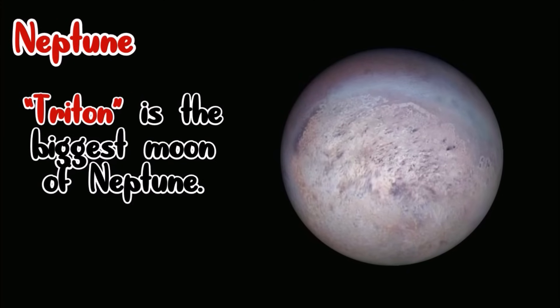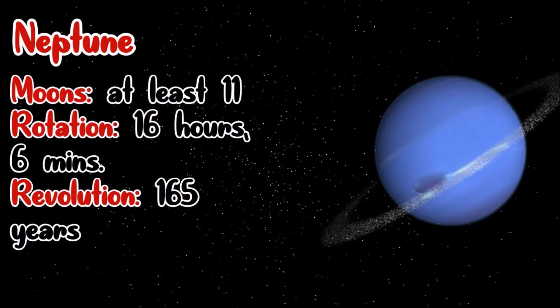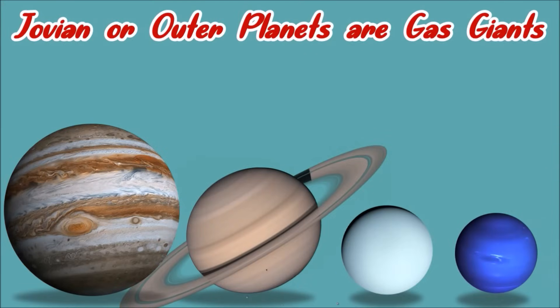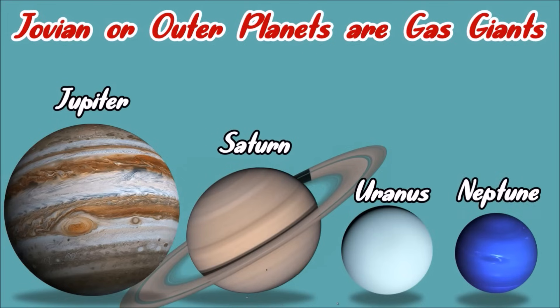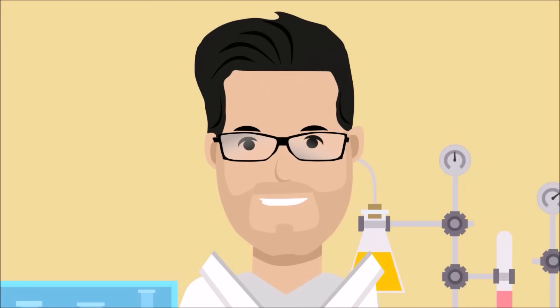The largest moon of Neptune is called Triton. Neptune's rotation requires 16 hours and 6 minutes. And to complete one revolution around the Sun, it requires 165 years. And these are the Jovian planets, or the four gas giants. Can you enumerate the planets of the solar system by which is the closest and the farthest planet from the Sun?